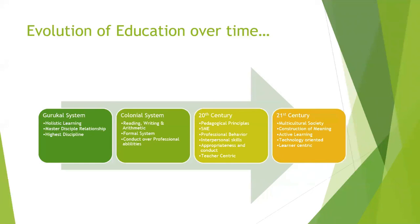Then we had the colonial system where the British entered India with certain objectives — they wanted people to learn how to read, write, and perform clerical jobs. So we had a colonial system of education where the focus was on the three Rs: reading, writing, and arithmetic. It was the first formal sort of education system that we had.